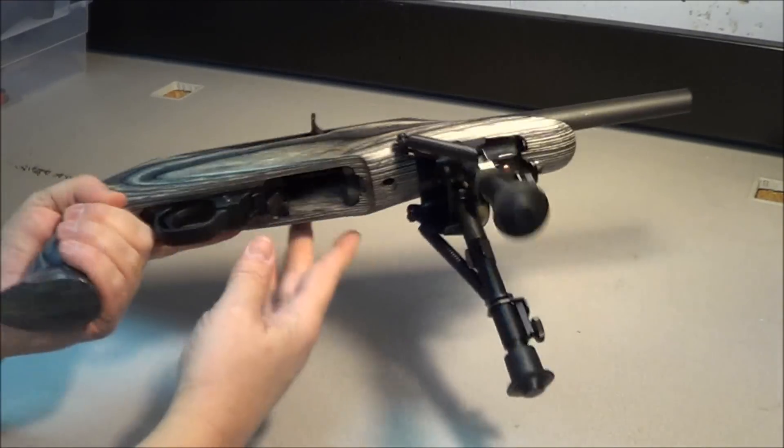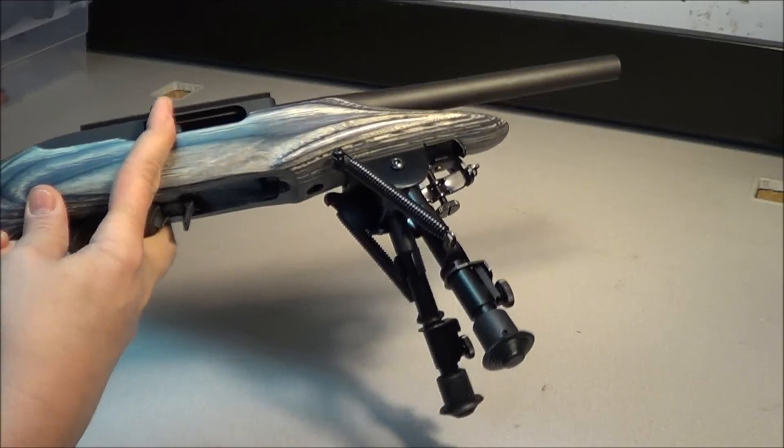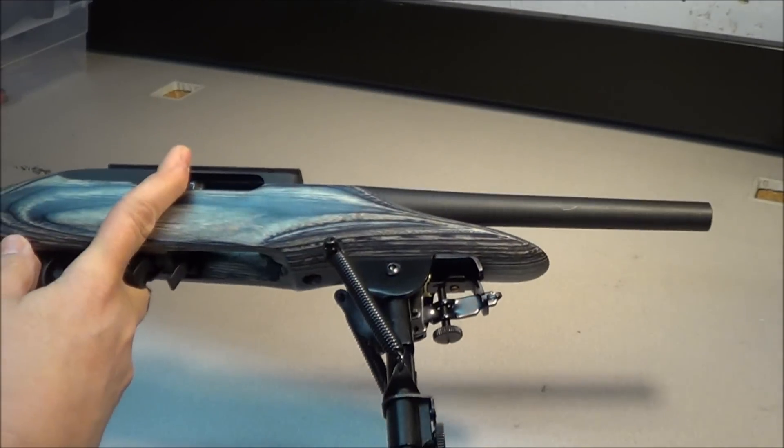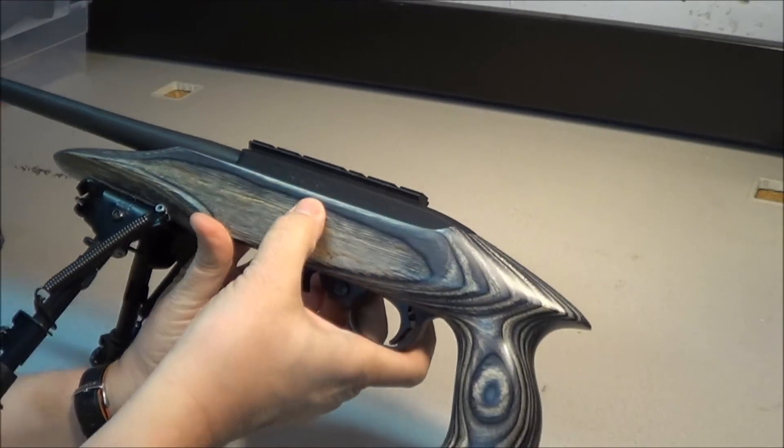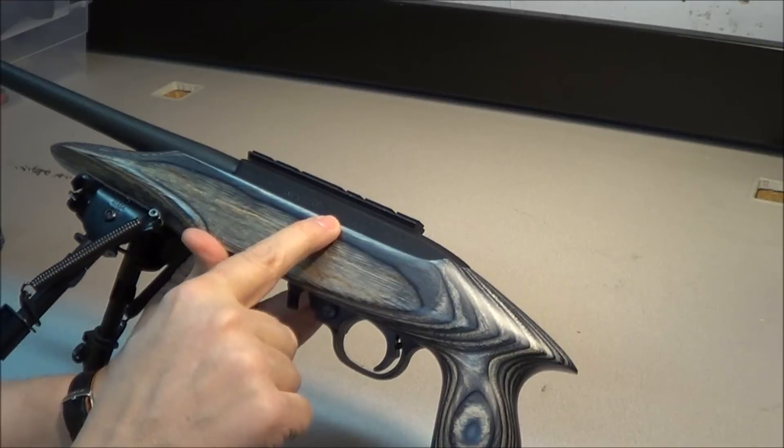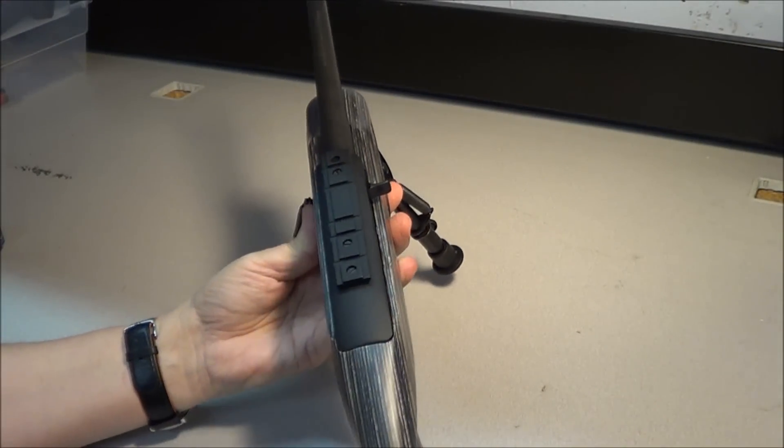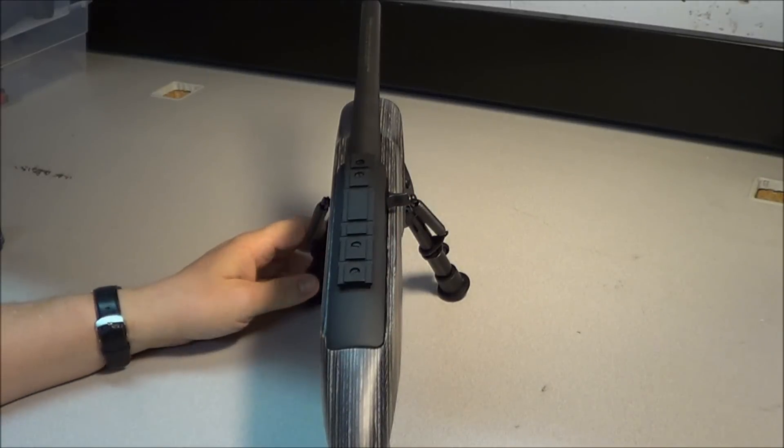It comes from the factory and the magazine is out and it is empty, the chamber is empty. Nowhere is it marked 10-22, it's actually marked Ruger 22 Charger. That way there's no confusion that somebody took a rifle and turned it into a pistol, which would be a no-no.